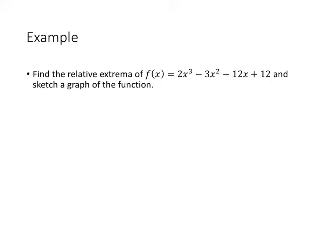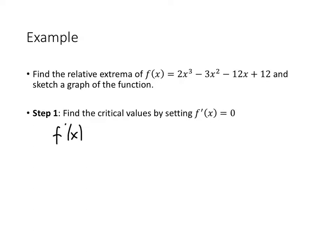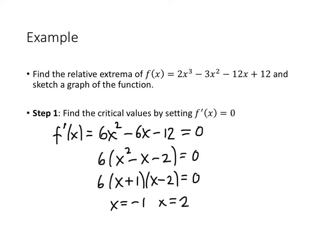Let's see the first derivative test in action. We want to find the relative extrema of the function and use it to sketch a graph. We start by taking the derivative and setting it equal to 0. The derivative f' is 6x² − 6x − 12, and setting it equal to 0 helps find the critical values. We should also check whether the derivative could ever be undefined — but nothing here causes that. Undefined derivatives come from dividing by 0 or taking the square root of a negative number. Solving the equation gives two solutions: x = −1 and x = 2. Those are our critical values — the places where the function might have a maximum or minimum.